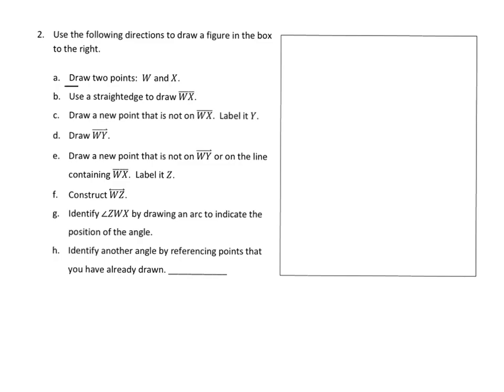First it says draw two points W and X. A point is like a dot — it's an indication of location. It doesn't have width, it doesn't stretch out, and it doesn't have height. It's just a location. So we've got a couple of points and we're going to label them W and X.